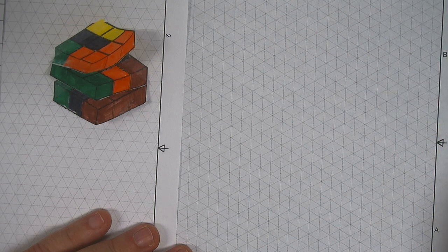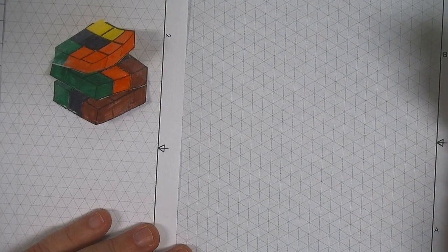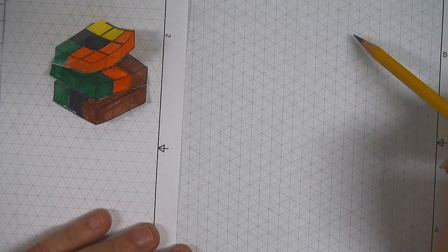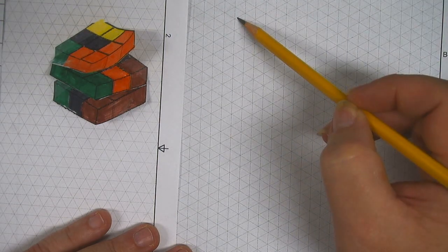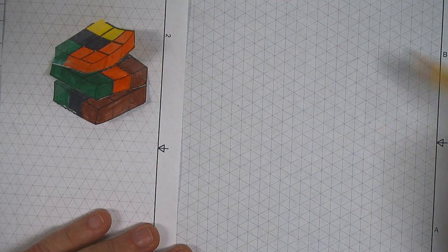Eventually what I'm going to have is a final drawing that consists of my isometric view in one corner, and then I'm going to have my top view, front side view, and then my right side view.